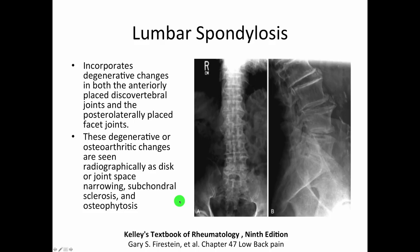Some important terminology: spondylosis is a general term for degenerative changes anteriorly on the discovertebral joints and posterolaterally on the facet joints. On X-ray you see joint space narrowing, sclerosis, and osteophytosis — all wear-and-tear changes from degeneration. Spondylosis describes all of those processes.